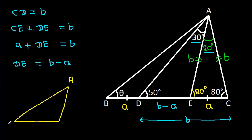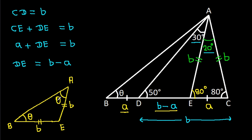In triangle ABE: AE is B, and BE is A plus (B minus A), which equals B. So AE is equal to BE. That means these two angles are equal. This angle is theta, so this angle will also be theta.